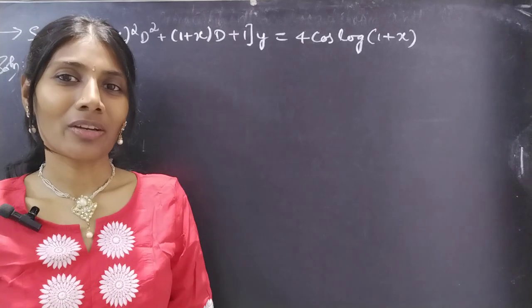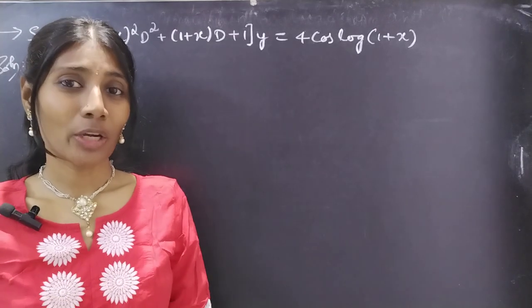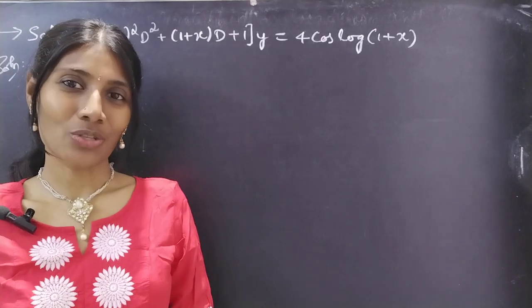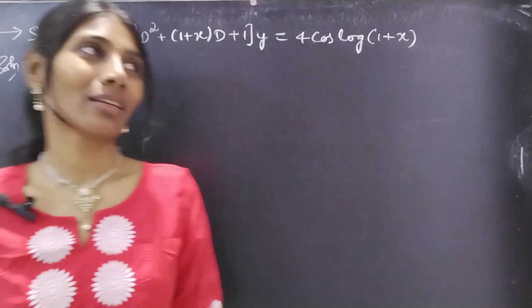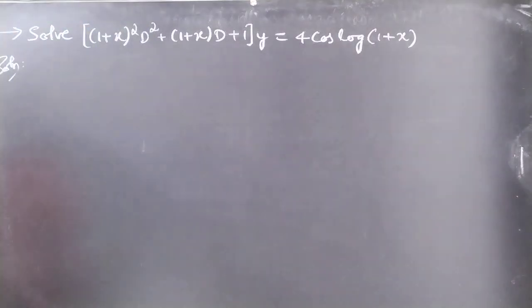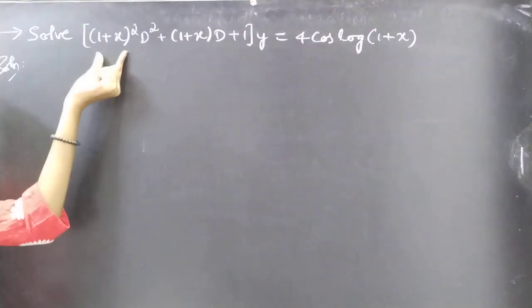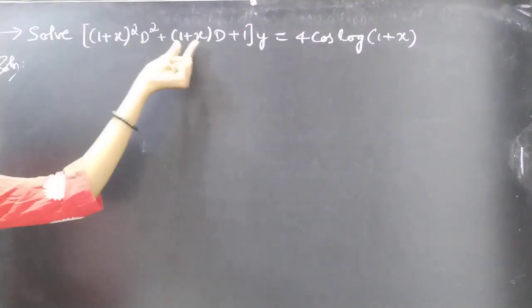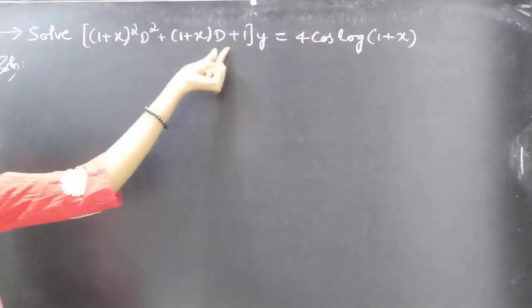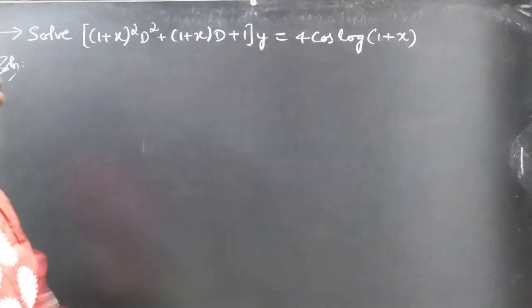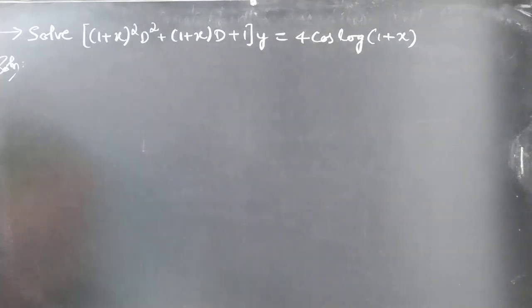Hello everyone, this is Jay Kalpana here. In this video we are going to solve a Legendre's equation. Problem: Solve (1+x)² d²y/dx² + (1+x) dy/dx + y = 4 cos(log(1+x)).